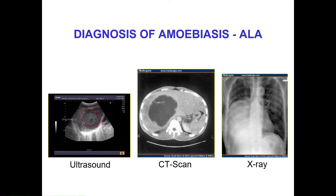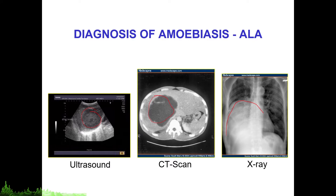On imaging, the abscess can be visualized. On chest x-ray, you can see elevation of the right hemidiaphragm, suggesting the presence of a large abscess.